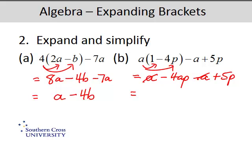And then we've got negative 4ap plus 5p. That's a little bit inelegant. We tend to want to put the positive term first, so 5p take away 4ap is a better way of writing that answer.